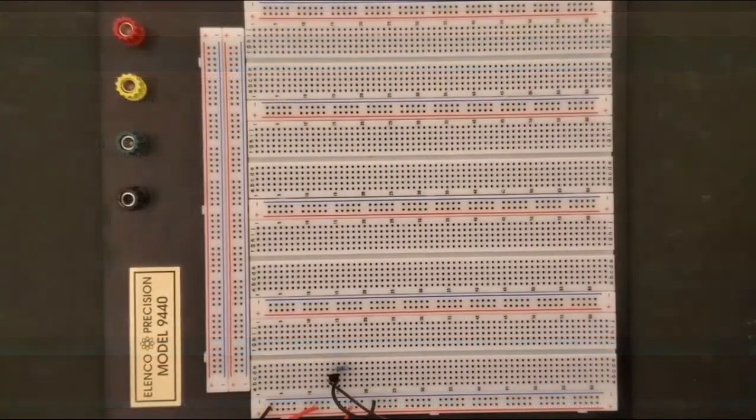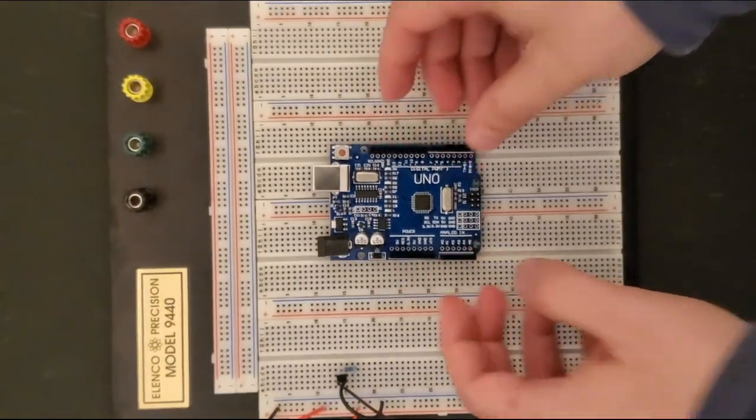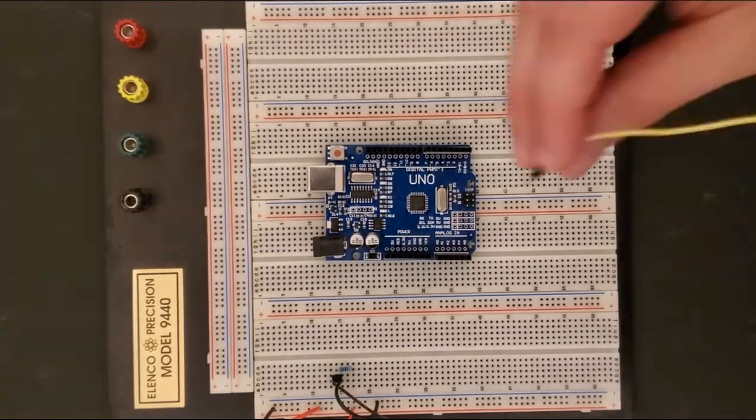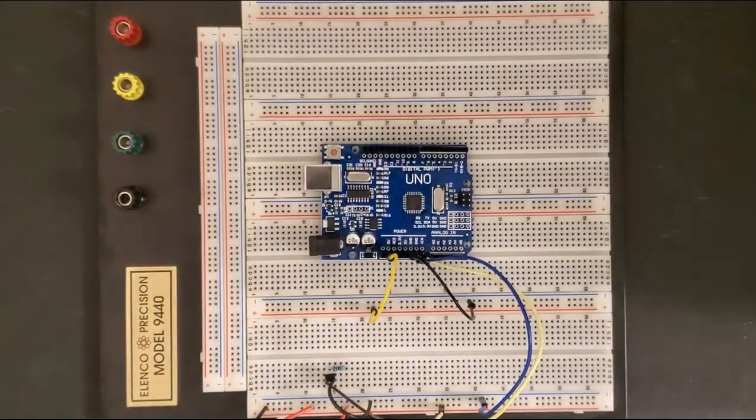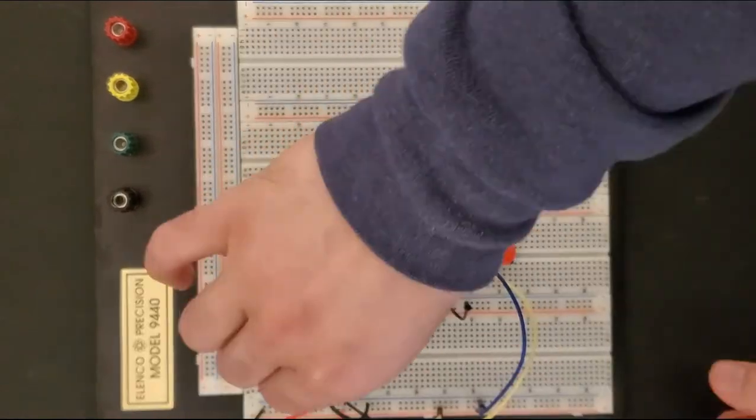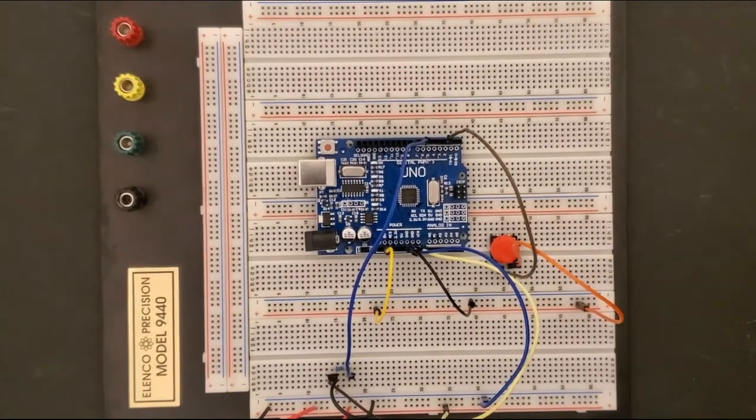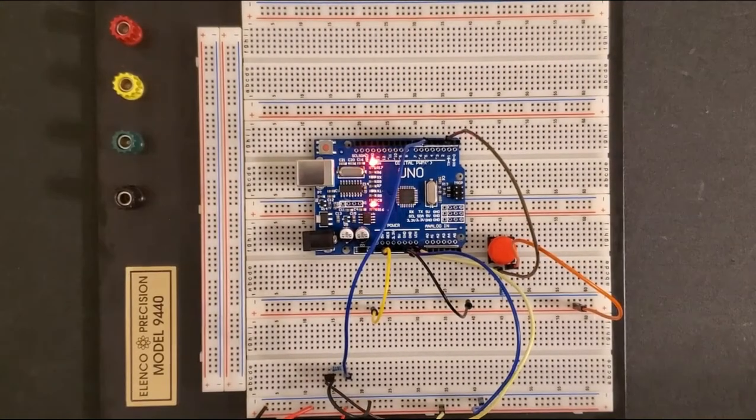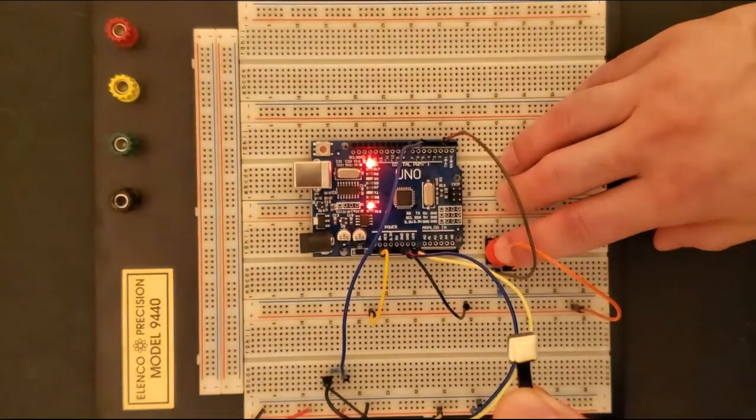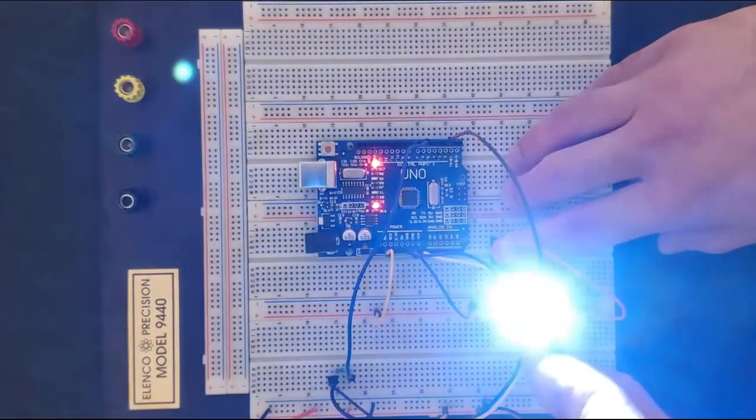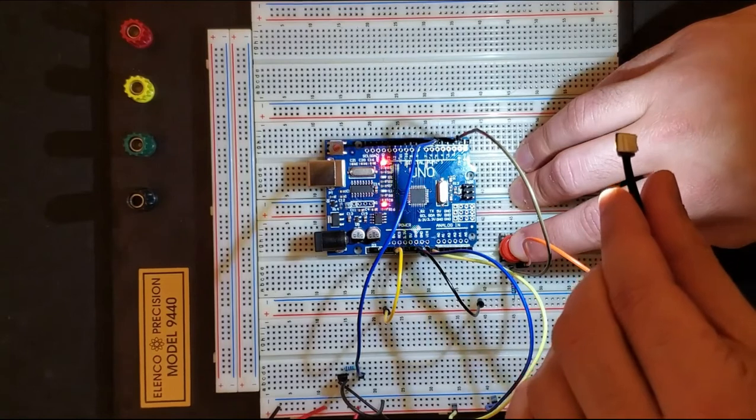Alright, so we'll now set up our breadboard using the Arduino circuit we reviewed previously. We'll go ahead and start placing the Arduino Uno and all the required components. Once done, we'll go ahead and test it. So you can see, every time we press the push button, the LED lights up. Same as before.